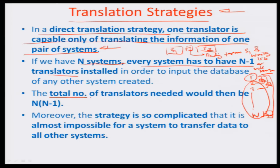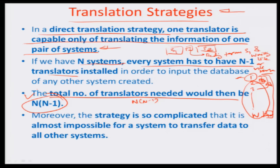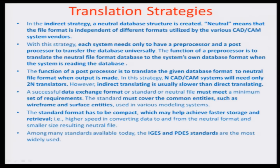The total number of translators needed is n times (n minus 1) — a very high number. Each machine requires n minus 1 translators, and there are n machines, giving n×(n-1) translators in total. This is a very complex strategy; it cannot work out and is almost impossible for a system to transfer data to all other systems by means of different translators. Each machine being equipped with n×(n-1) translators is absolutely impractical. Therefore, the other approach is to create a neutral database.